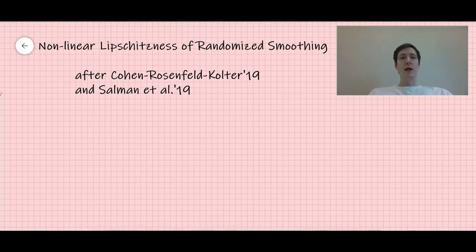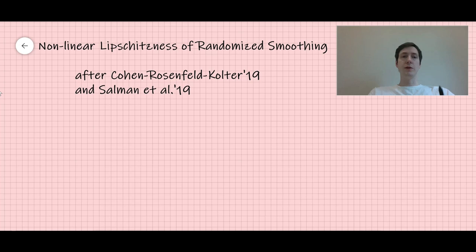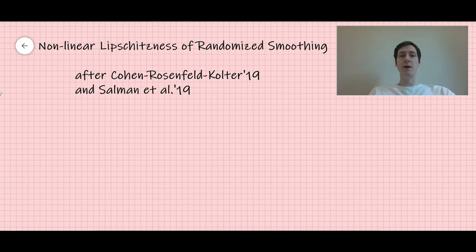Hi everyone. So today I'm trying a new format of short videos where I will give you a theorem and a proof of that theorem. Hopefully I will cover topics in optimization, probability, and machine learning. Today, to start, I'm going to be talking about adversarial machine learning, and more specifically, randomized smoothing. This presentation is after a very nice paper of Cohen, Rosenfeld, and Coulter from 2019. This is where the theorem appeared, and I will explain the proof that we gave in our joint paper, Salman et al., from 2019.